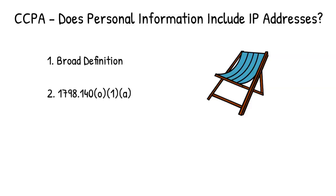Now, what about IP addresses and the CCPA? We have to look at section 1798.140, subsection (o)(1)(A). This is the section of the CCPA where we see definitions. The CCPA is truly one of the most incredibly poorly drafted laws ever.